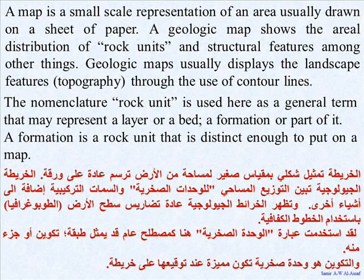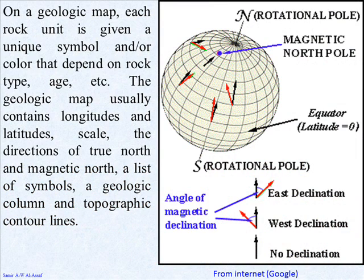The term 'rock unit' is used here as a general term that may represent a layer or a bed, a formation, or part of it. A formation is a rock unit that is distinct enough to put on a map. On a geologic map, each rock unit is given a unique symbol and/or color that depends on rock type, age, etc.